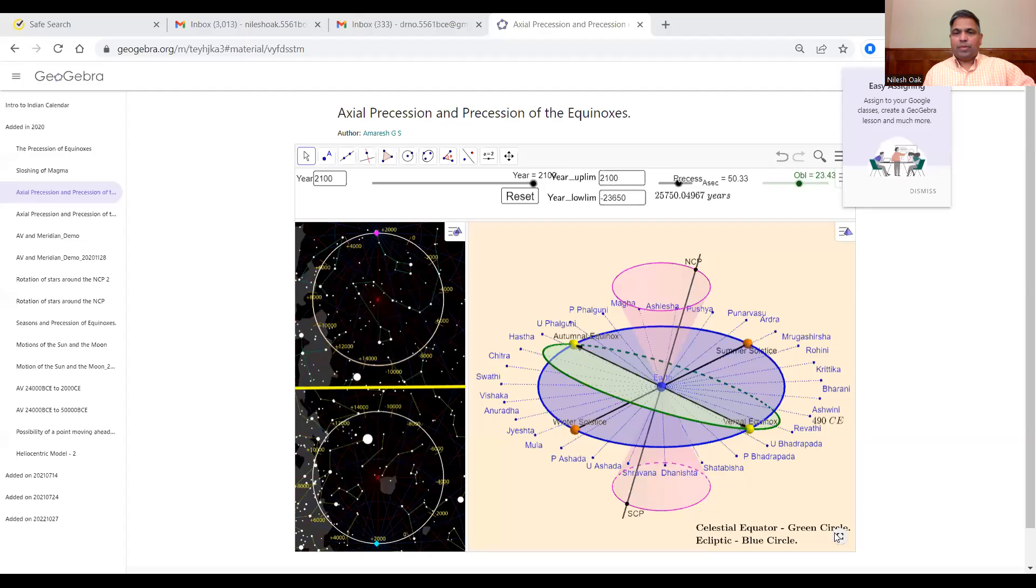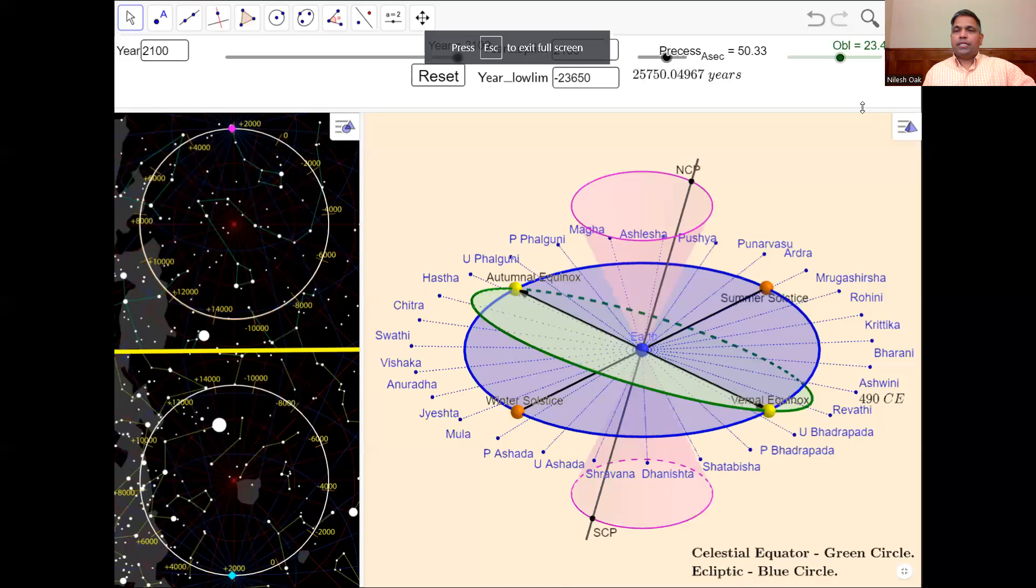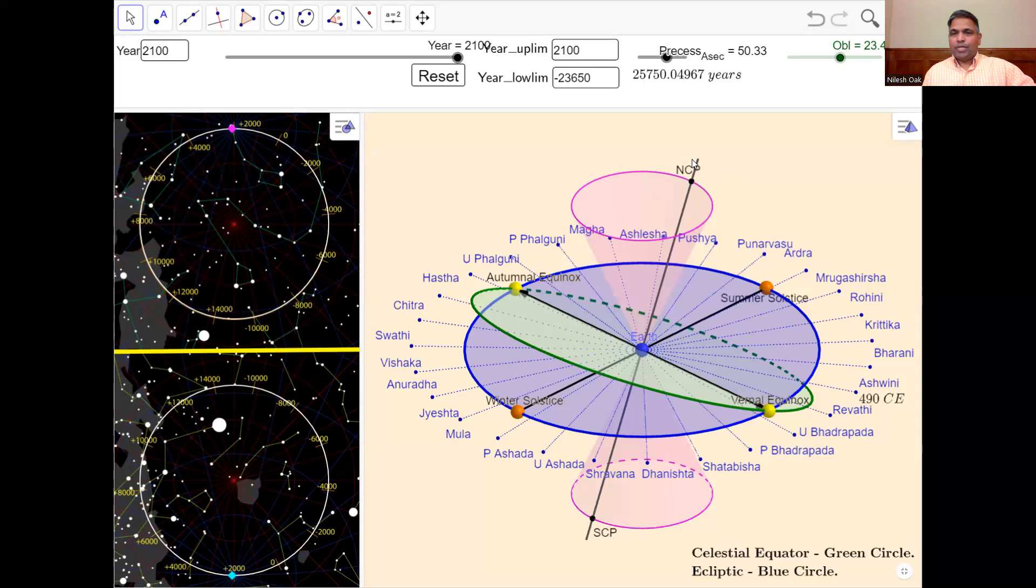All right, and with that, I am going to take you to the simulation of this phenomenon. Notice where the point of Earth's axis is pointing to in the northern hemisphere. That refers to NCP, North Celestial Point. You have the similar point in the southern hemisphere, South Celestial Point.